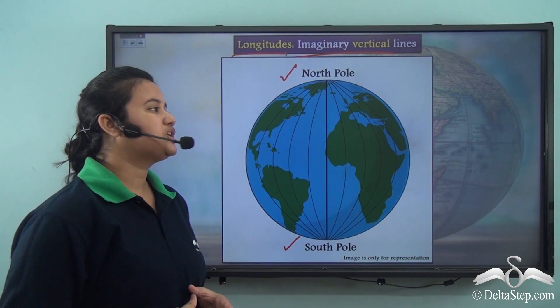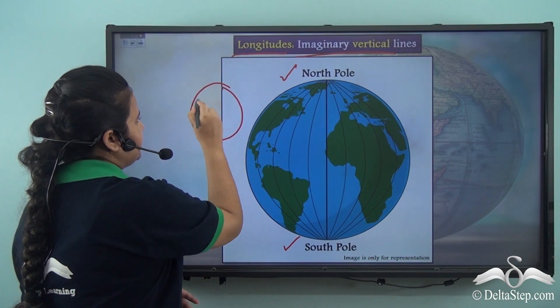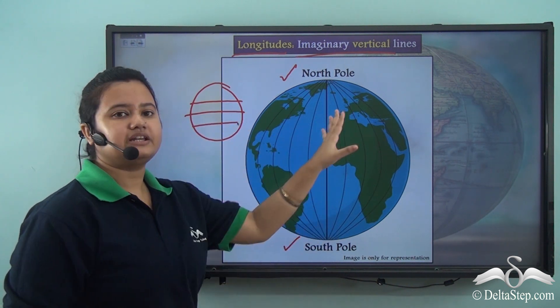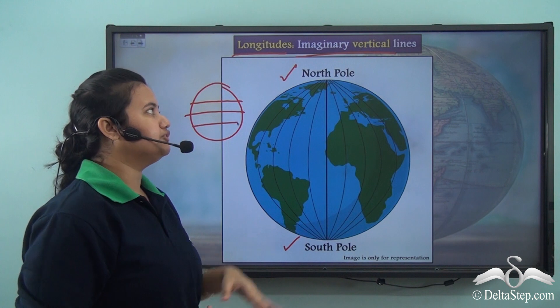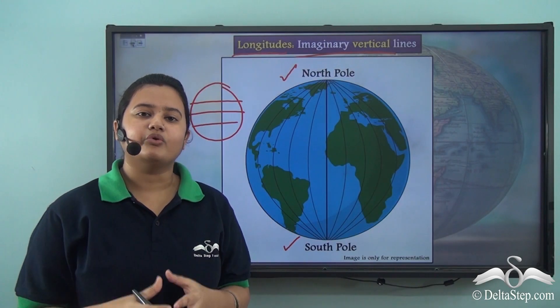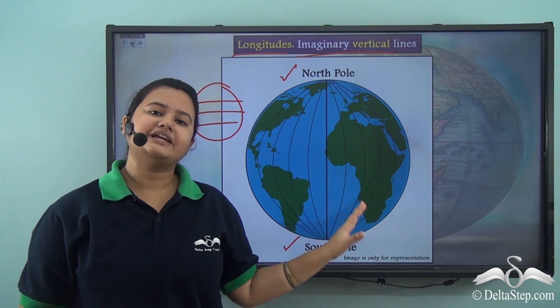The vertical imaginary lines running from north pole to south pole are known as longitudes. So, unlike latitudes which are horizontal imaginary lines, the longitudes are vertical imaginary lines running from north pole to south pole. Let us know more about these imaginary lines.